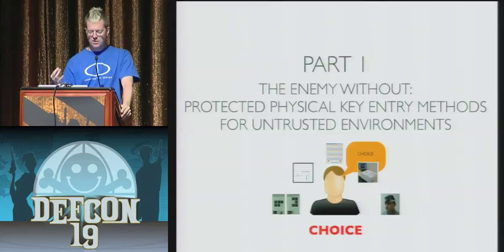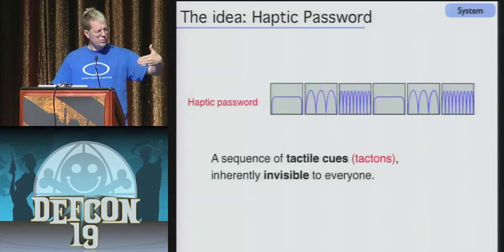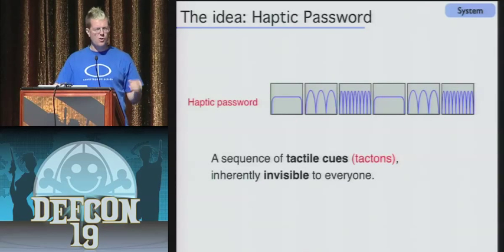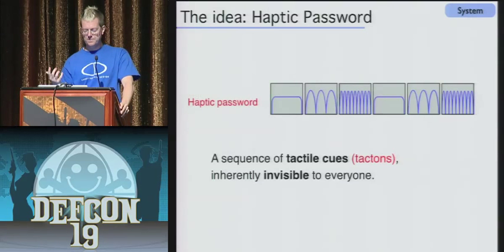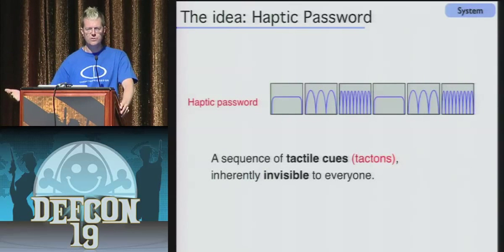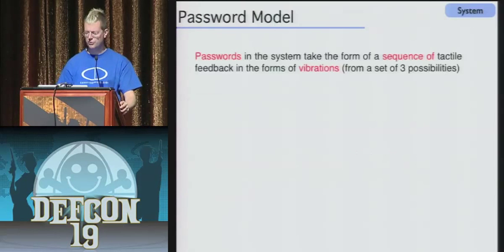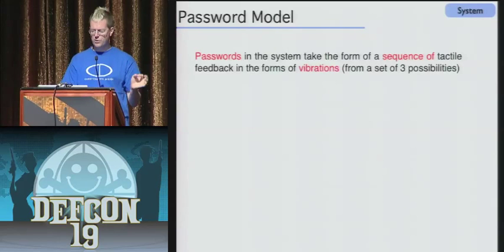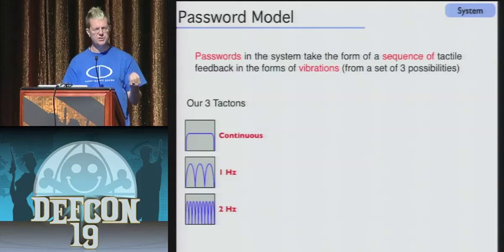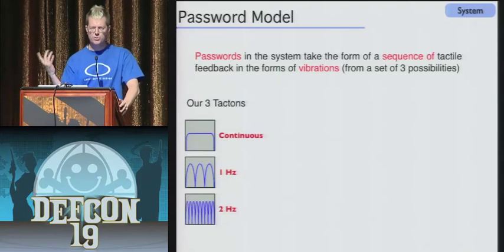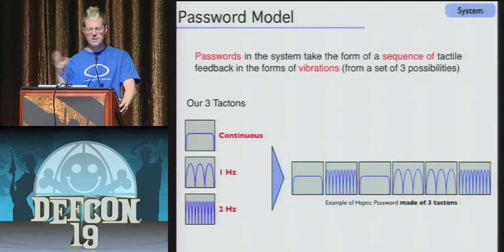Part one: new alternatives for physical key entry to avoid observation at the terminal. The basic idea is a haptic password — a side channel that's not visual and is less easily observable. A haptic keypad is observation-resistant because the sensory modality is less leaky; people have a harder time feeling what you feel than seeing what you see. In this work, there's a series of tactile cues — or tactons — that you feel at the fingertips, inherently invisible to someone watching. There are three possible tactons: a continuous buzz, a one-hertz pulsing, and a two-hertz pulsing — these different modes are pretty easily distinguishable with the fingers.